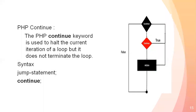Now, we had break at 5. But if we need to skip only certain iterations while continuing the loop, we use the continue keyword. The PHP continue keyword is used to skip the current iteration of a loop, but it does not terminate the loop.